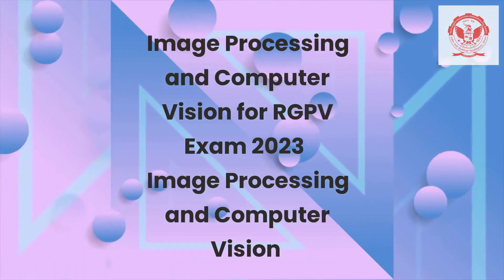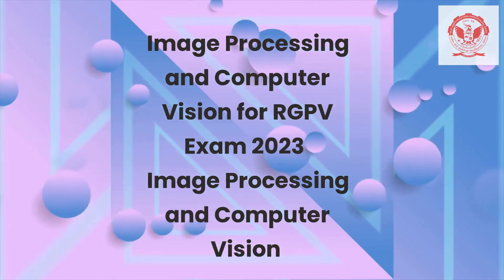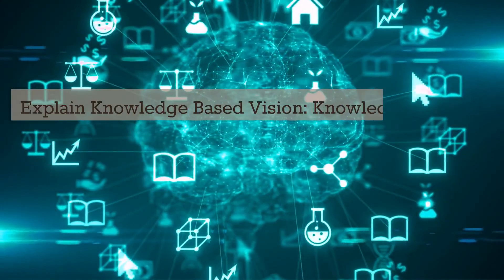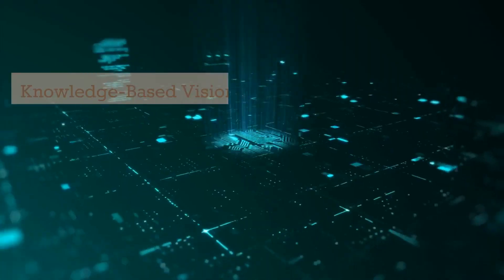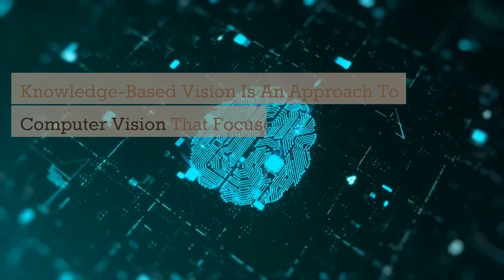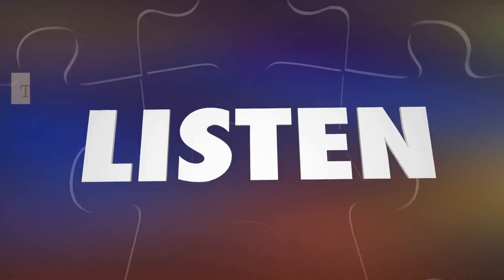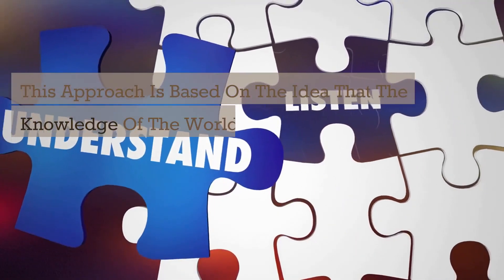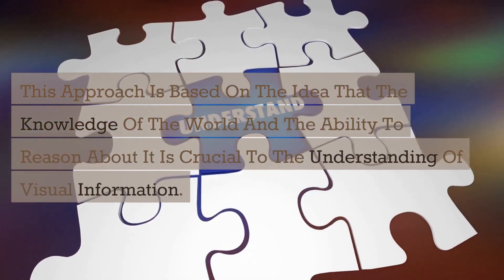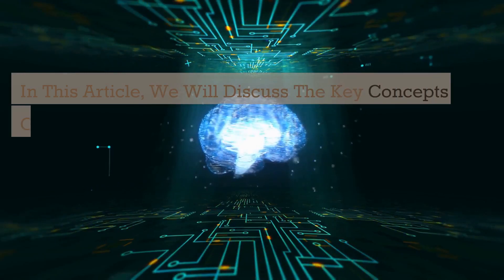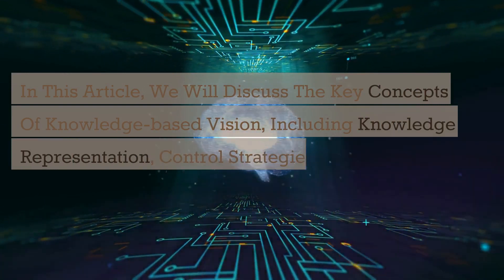Image Processing and Computer Vision for RGPV Exam 2023. Knowledge-based vision is an approach to computer vision that focuses on the integration of knowledge and information processing techniques with computer vision. This approach is based on the idea that knowledge of the world and the ability to reason about it is crucial to the understanding of visual information. Key concepts include knowledge representation, control strategies, and information integration.